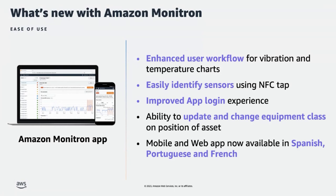Technicians and operators on the factory site have difficulty keeping track of the sensors associated with a particular asset. We now provide them the ability to easily find the asset by tapping the sensors using the near-field communication capability on their phone. We have improved the Monitron app login experience by reducing latency when trying to log into the mobile app, as well as provided customers the ability to save credentials for up to seven days. At the time of setting up assets, customers frequently assign assets wrong ISO class types, or sometimes large assets have multiple sensors each of a different ISO class type. Customers did not have the ability to change the class type once assigned, but we now have the ability for customers to update and change equipment class on the position of the asset.